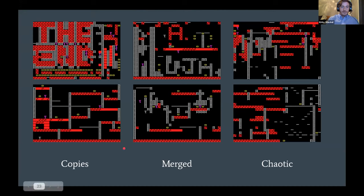Additionally, to look at the levels more directly, we saw three types of levels that were generated for the most part: copies, merged levels that merge different structures from different levels together, and then completely chaotic levels. As you can see over here, this level is almost an exact copy of level two from the original game. I think that this rope right here is the only difference.